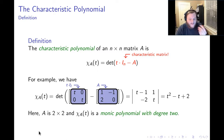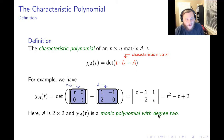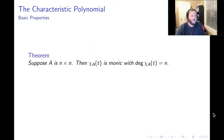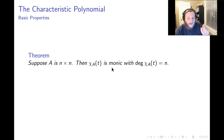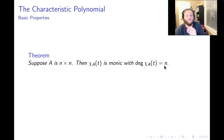In this example, A is 2 by 2, and the characteristic polynomial is a monic polynomial of degree 2. It turns out this always happens: if our matrix is N by N, then the characteristic polynomial is always a monic polynomial with degree equal to N, the size of the matrix.